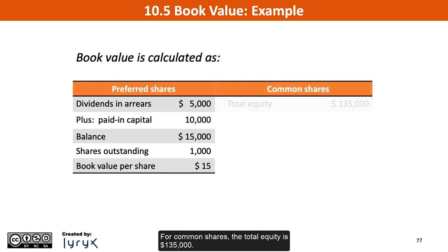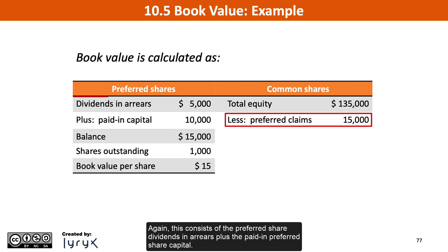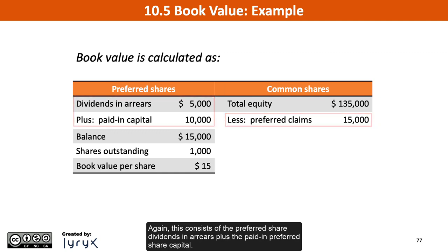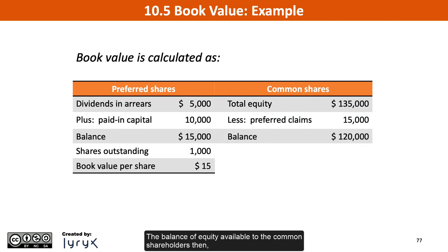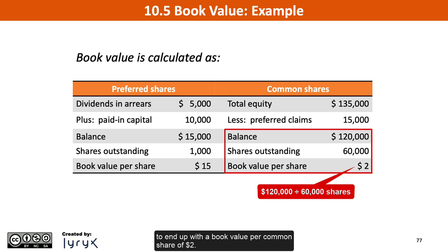For common shares, the total equity is $135,000, and we deduct the preferred shareholders' claims of $15,000, which we just calculated. This consists of the preferred share dividends in arrears plus the paid-in preferred share capital. The balance of equity available to the common shareholders, then, is $120,000, which we divide by the 60,000 outstanding shares, to end up with a book value per common share of $2.